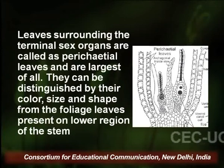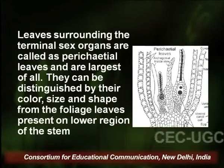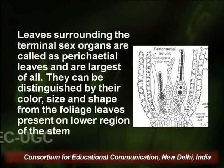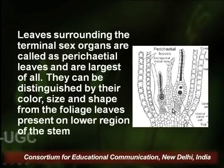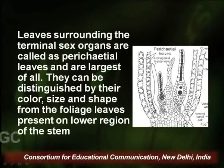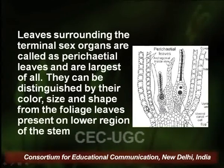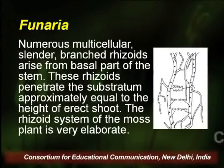The prostrate branches and lower regions of upright branches usually bear colorless scale-like leaves. The leaves surrounding the terminal sex organs are called perichaetal leaves and are the largest of all leaves, distinguished by their color, size, and shape from the foliage leaves. The sex organs — archegonia or antheridia — are surrounded by these densely arranged, large perichaetal leaves at the apex of sexual branches.